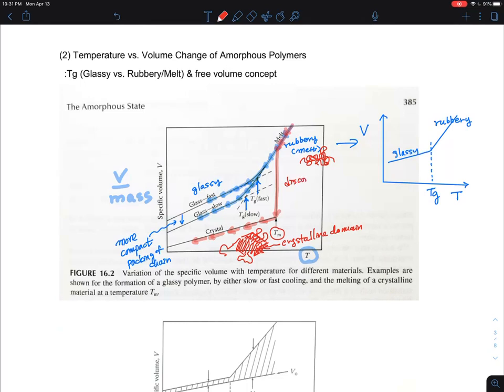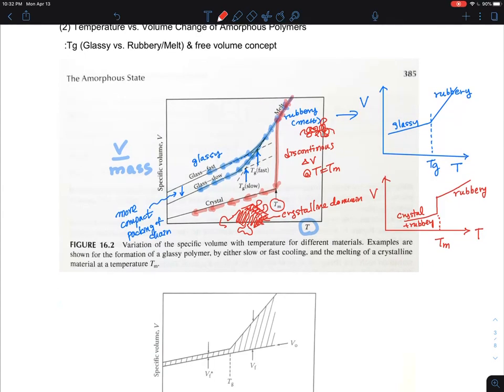The discontinuous volume change happens at temperature Tm. That's the key difference: they have a very distinct drop in the volume. If it is Tm, you will see rubbery become crystal plus rubbery. This is volume change that is discontinuous.